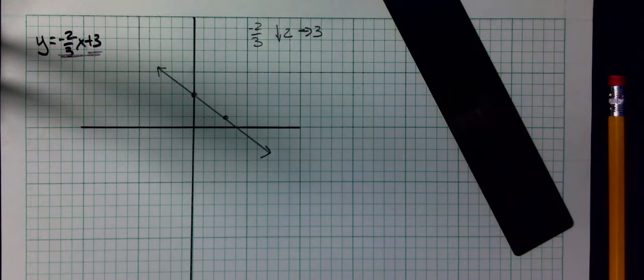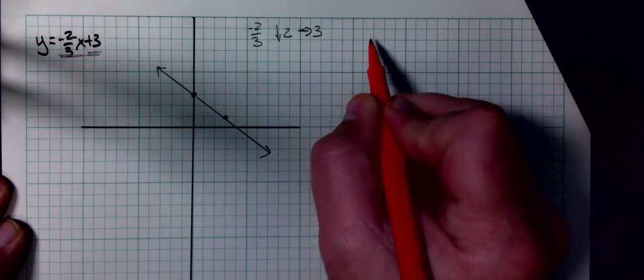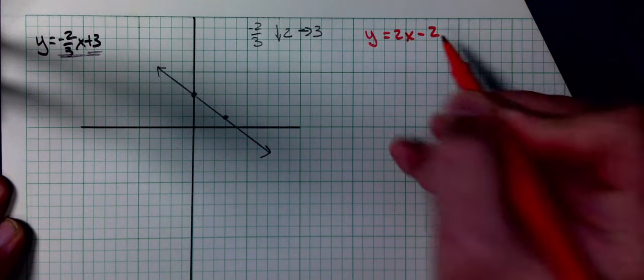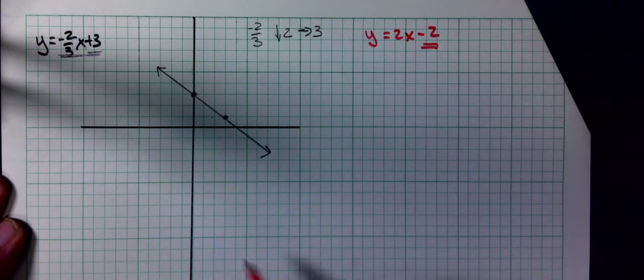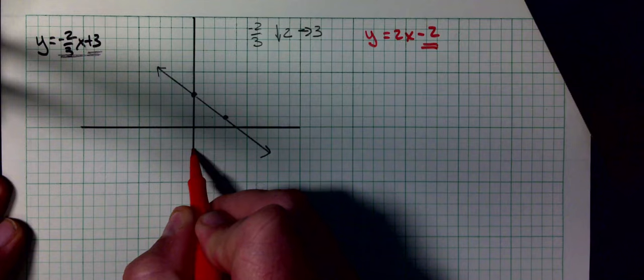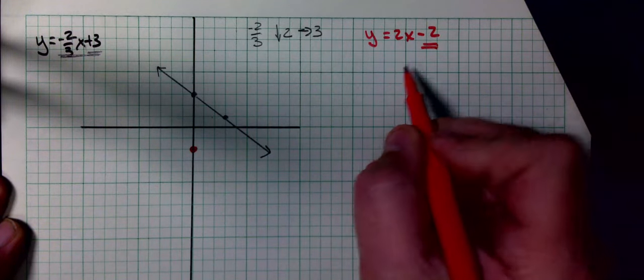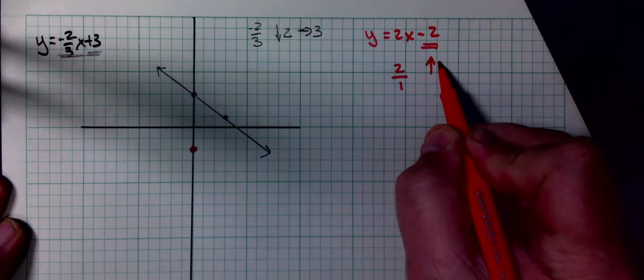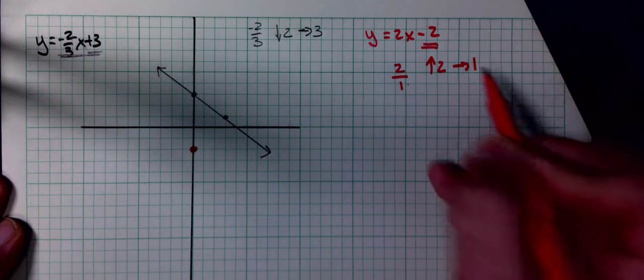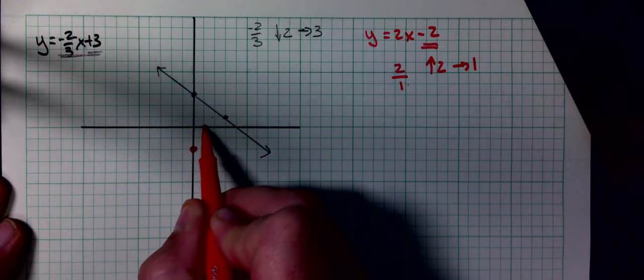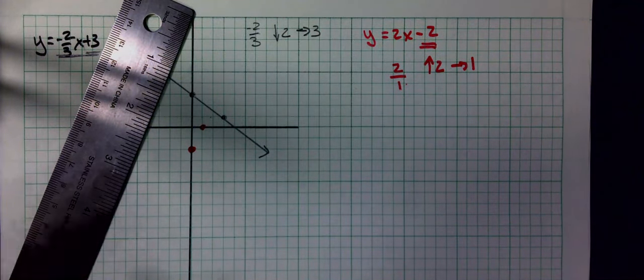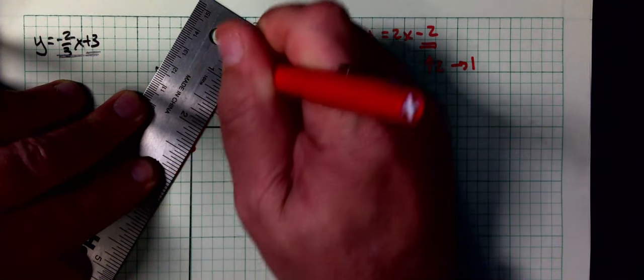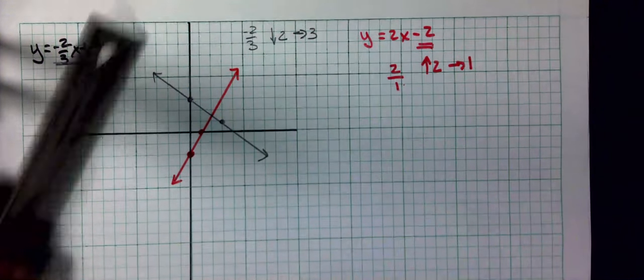Next one I'm going to do in red. That is y equals 2x minus 2. First thing that I graph again is the y-intercept, which is minus 2. That 2 slope is actually a 2 over a 1, which means I'm going to go up 2 and to the right 1. If I go up 2, to the right 1, and connect those points. That's the second graph.